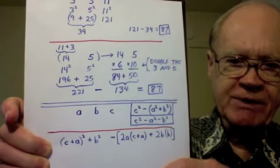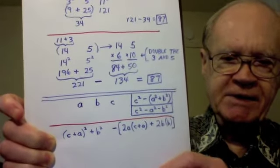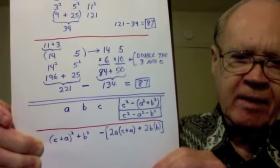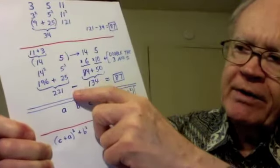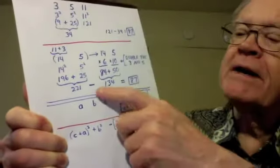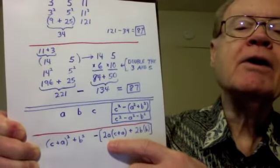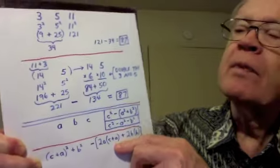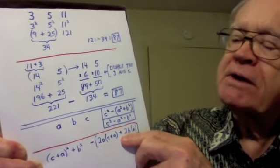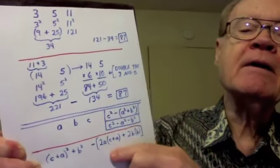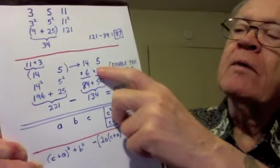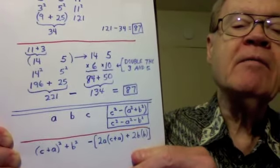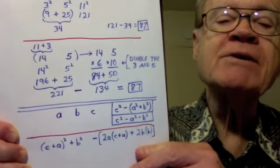Now, in my second sequence, to get the same result, I take C plus A, that's the 11 plus 3, squared, minus 2A, which is that 6, times C plus A, which is the 14, plus 2B, which is the 10, times B, which is the 5. So, we have (C + A)² + B² minus 2A times (C + A) plus 2B times B.